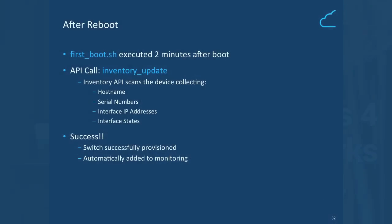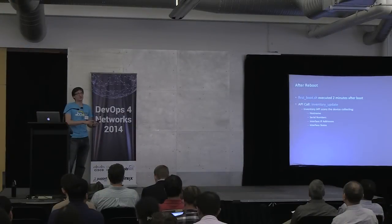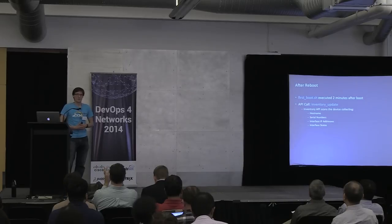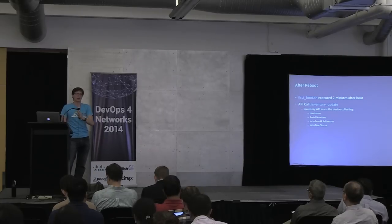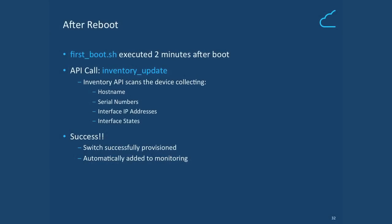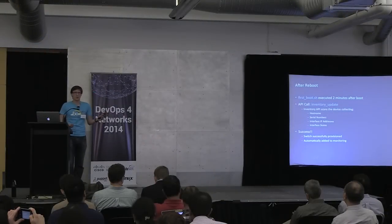Lastly, the script downloads a first-boot.sh, which runs when the switch reboots, and then reboots the device. After reboot is complete, we use Arista's Advanced Event Manager to execute this first-boot script two minutes after boot-up. It calls out to a third API — our inventory management system — which does a scan of the device, pulling out host names, serial number, interface states, IP addresses, and all that information, and populates it into our inventory control database. Once it's in there, success — the switch has been successfully provisioned. It will be automatically added into monitoring and other polling tools like Rancid.